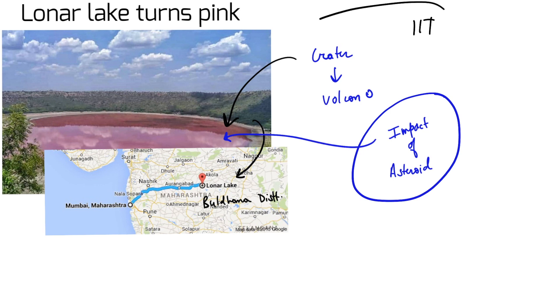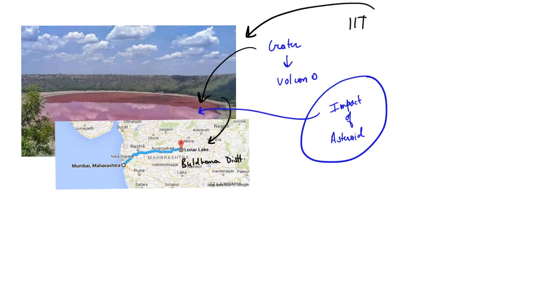Moving forward, due to the astro connections — according to IIT Bombay — the rock minerals found in the lake are very similar to the moon rock structures brought by the Apollo program.